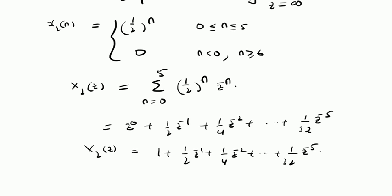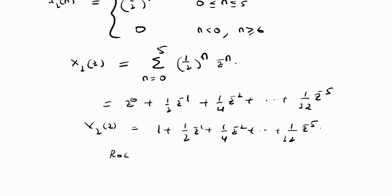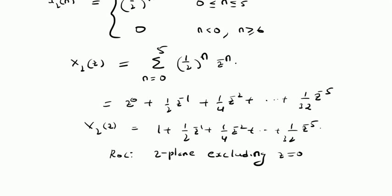The ROC for X2 of Z is again the whole Z plane excluding Z equal to 0. Clearly, at Z equal to 0 these terms diverge. So the ROC should not include Z equal to 0, but it will be the whole Z plane excluding the origin.